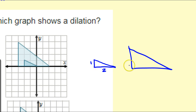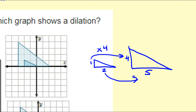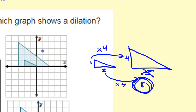Let's look at some of the lengths in the small triangle and the big triangle in the first image. The small triangle: the vertical side is 1 and the horizontal side is 2. The bigger triangle: the vertical side is 4 and the horizontal side is 5. Now let's think about what the scale factor is. If I look at the 1 becoming a 4, that would be a scale factor of 4. So the 2, if the scale factor is 4, the 2 should become an 8. But I see it's a 5. So this is not a dilation.